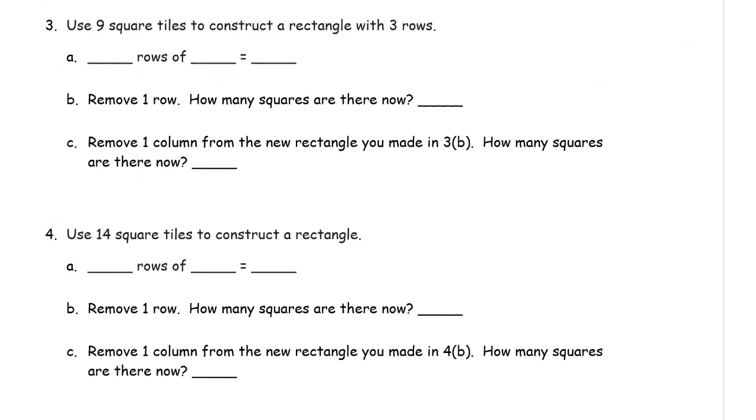Use 9 square tiles to construct a rectangle with 3 rows. So that's going to look like this. You may want to try it yourself before you watch my spoiler of what it's going to look like. There's only one way to make it. It's going to end up looking like that. And that's going to be 3 rows of 3, which is 9.